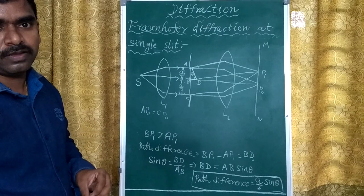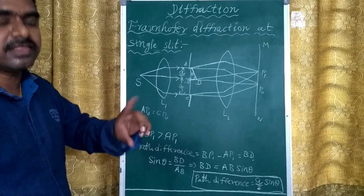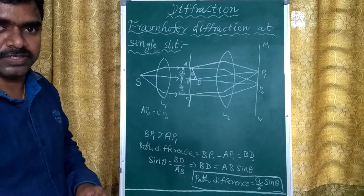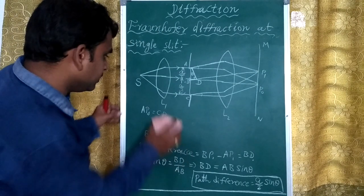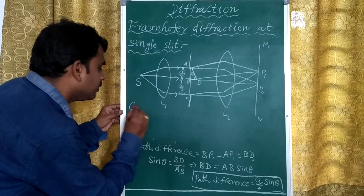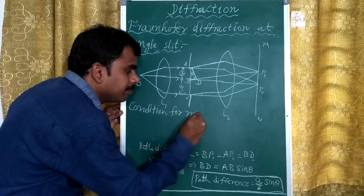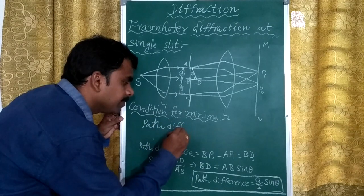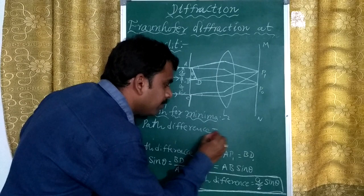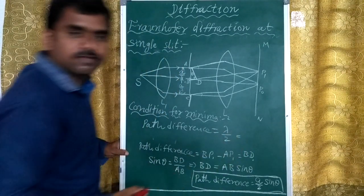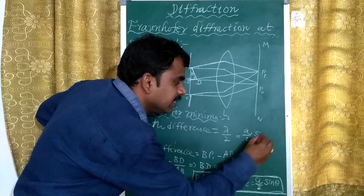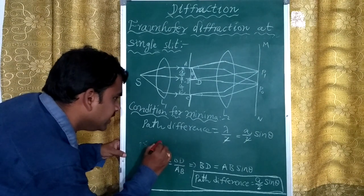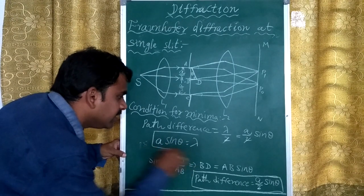At position P1, if we want minimum intensity, the condition is that the path difference must equal λ/2. Setting (a/2)·sin θ = λ/2, the 2s cancel, giving the condition for minima: a·sin θ = λ.